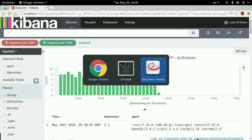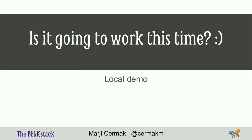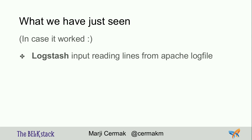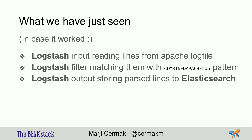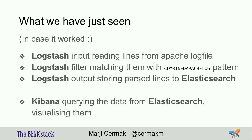So, what we just saw: Logstash reading 33,000 input lines from an Apache log, filtering using the combined Apache log pattern, storing it in Elasticsearch. Then using Kibana to go through the data, look at it, and investigate — we could also use geo IP.